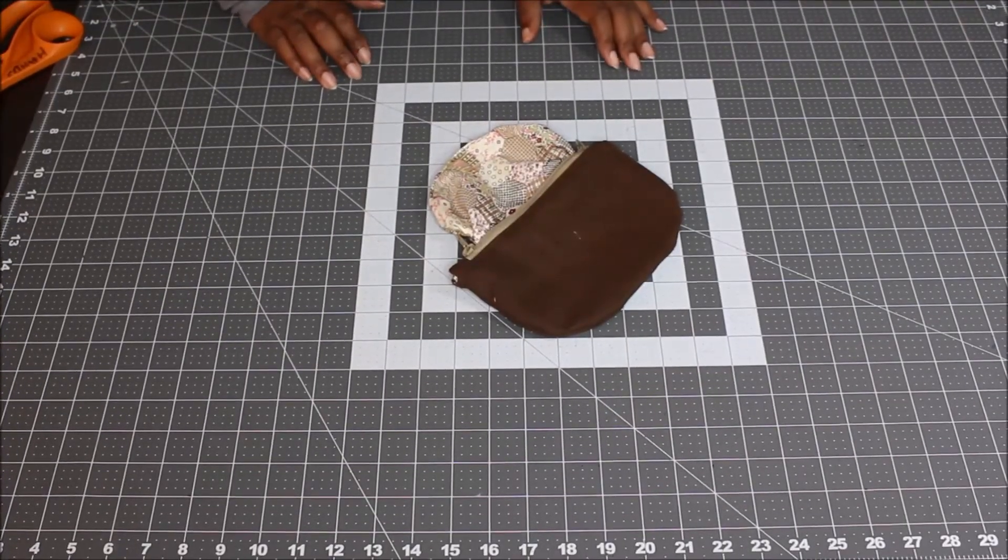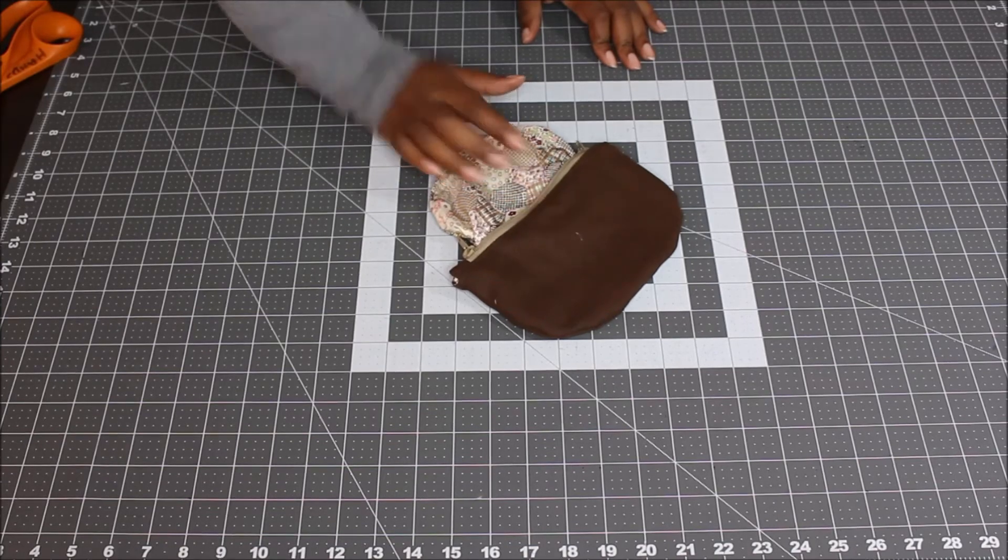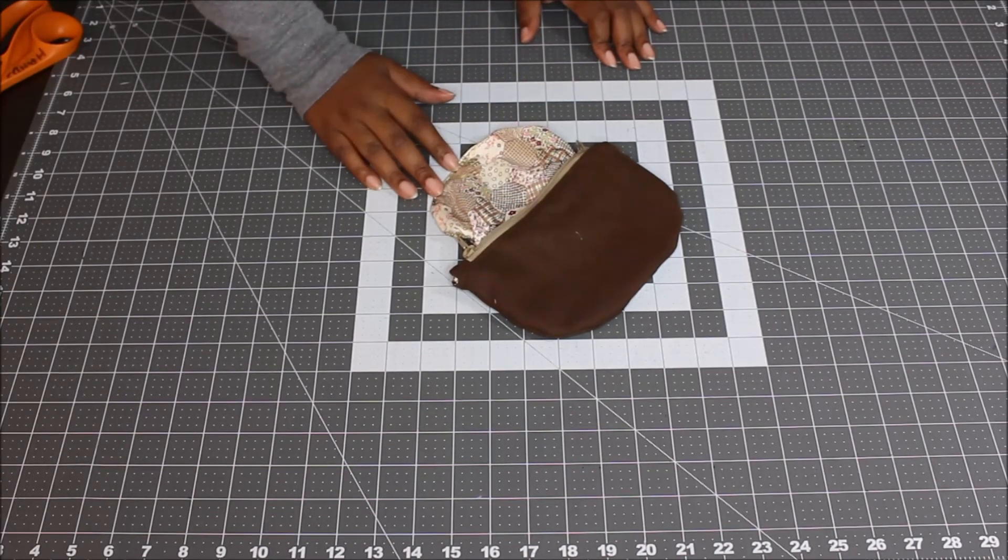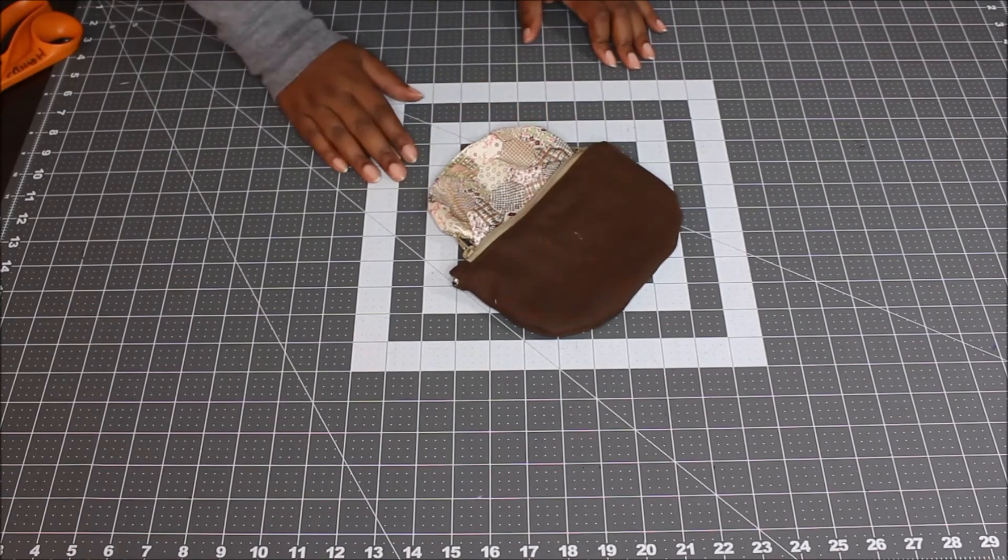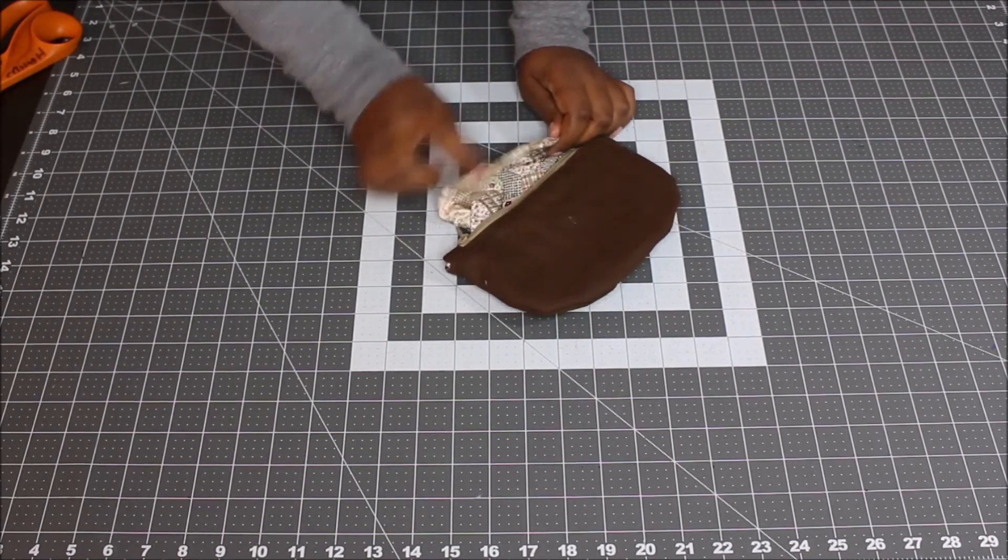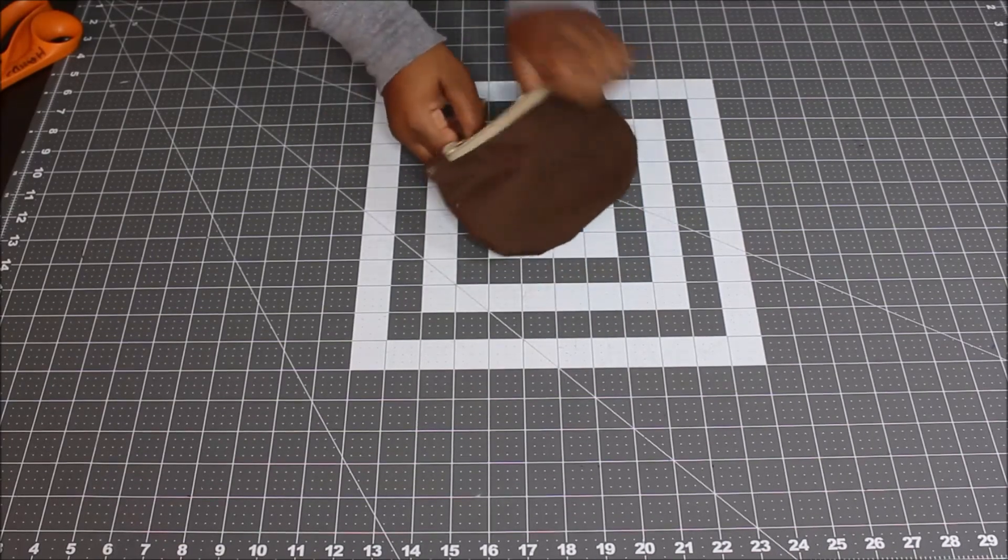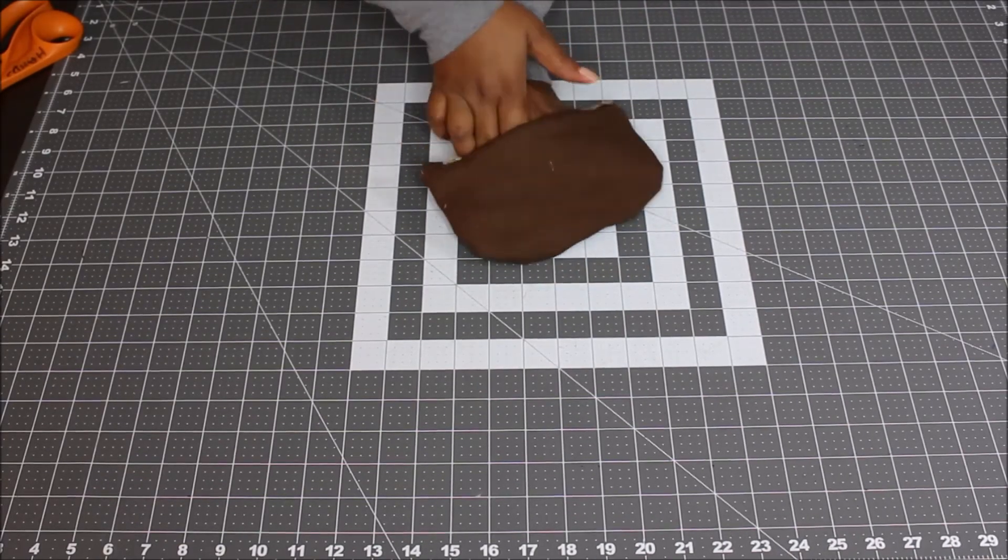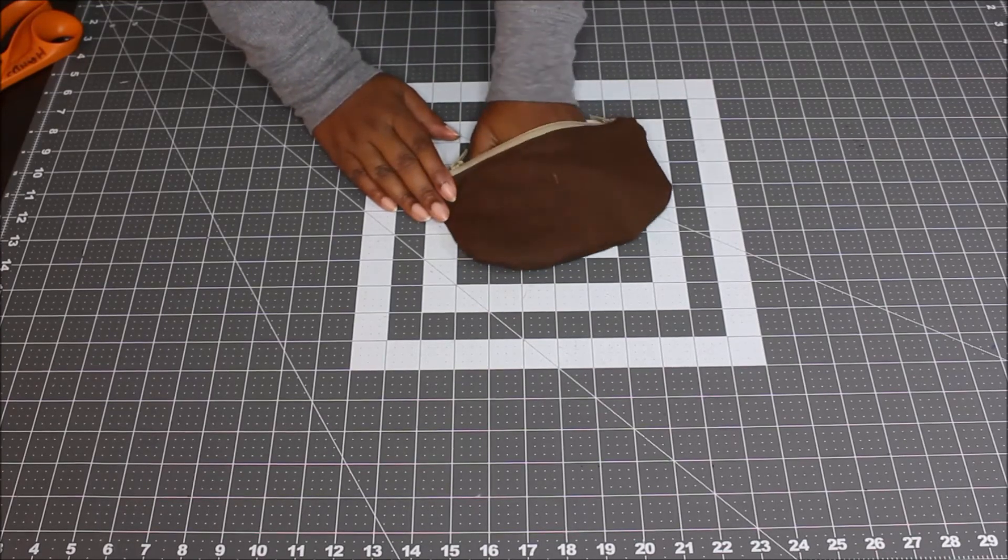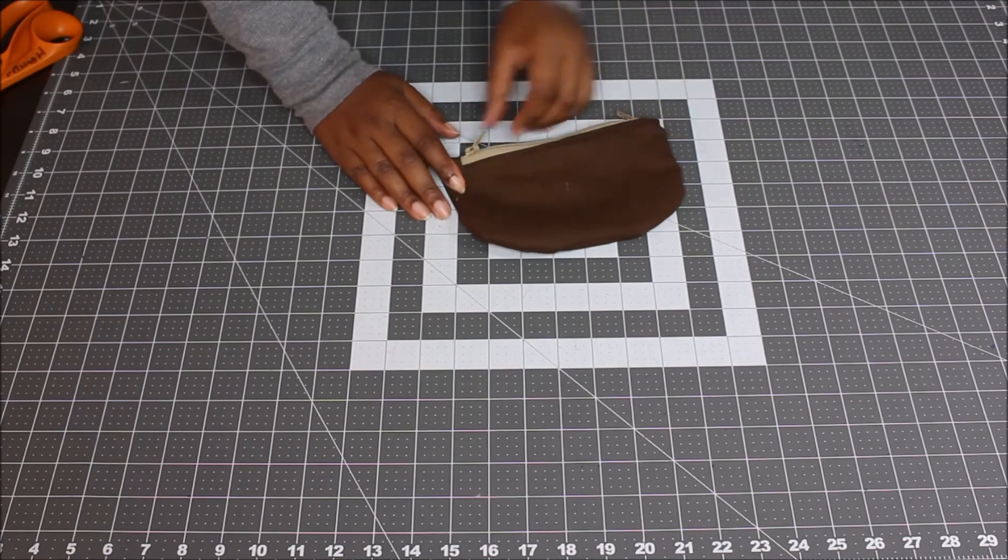As you can see at the sewing machine, once I sewed everything together, leaving an opening in my lining, I turned my bag to the right side. I also sewed up the opening by sewing really close to the edge to sew up the lining. So now I'm just going to place the lining on the inside of the bag. Give your bag a good press and you are all done.